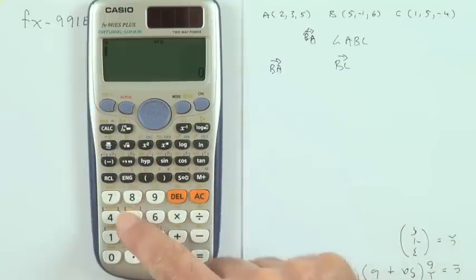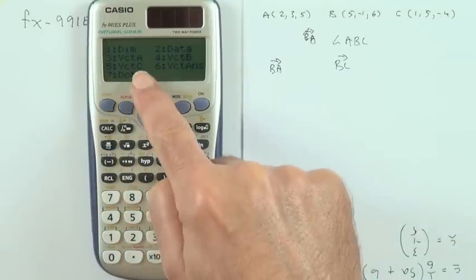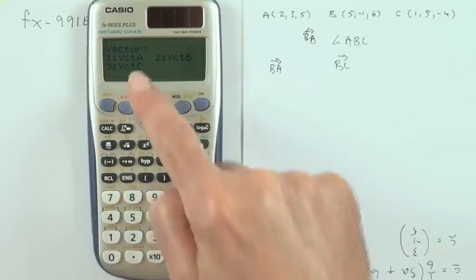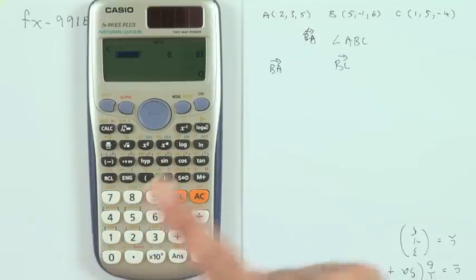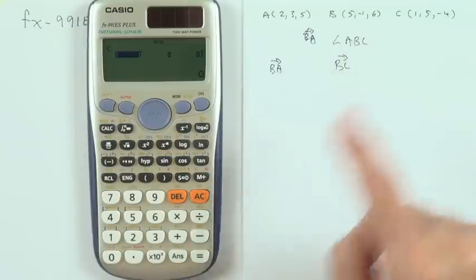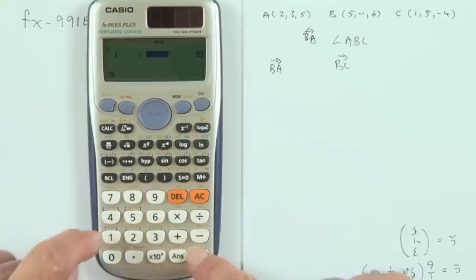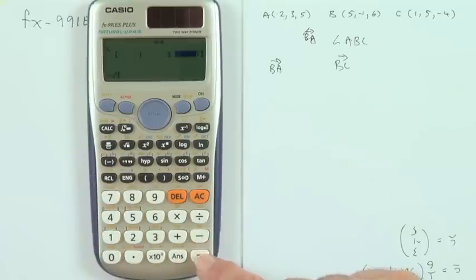C, go into the vectors, I want to dimension it first. I want vector C, so that's 3. I want it to be 3-dimensional, so I press 1, and then enter the data: 1, 5, negative 4. Make sure you press equals, clear. Now they're all stored in there.